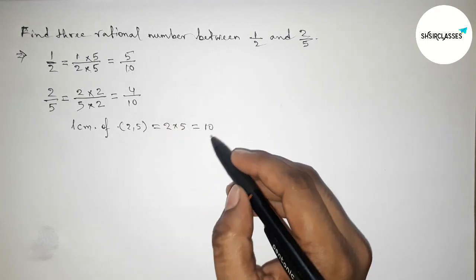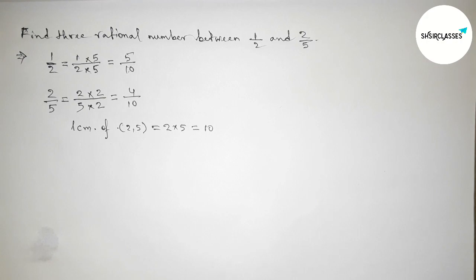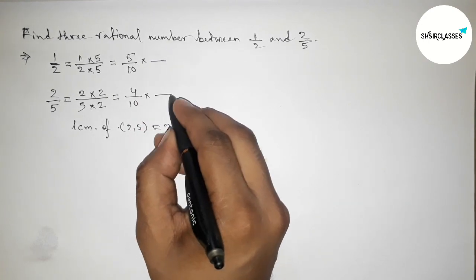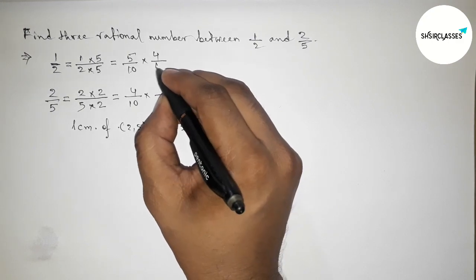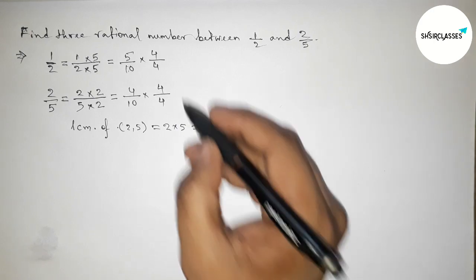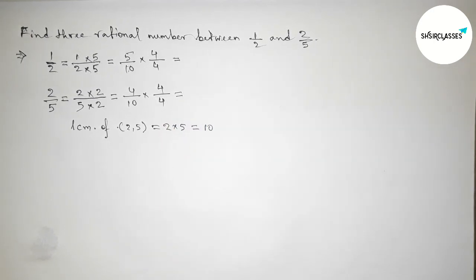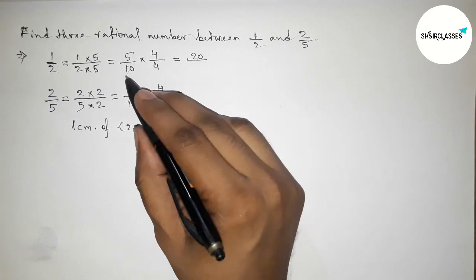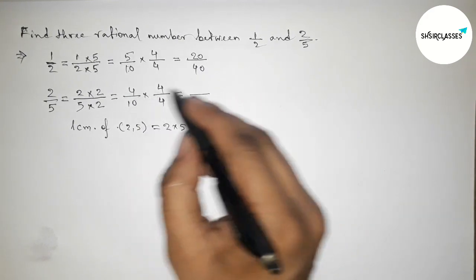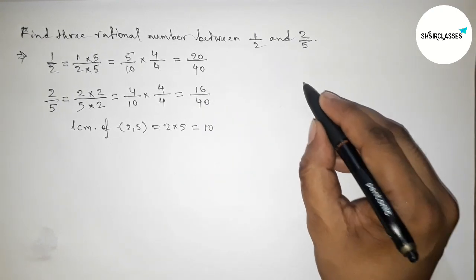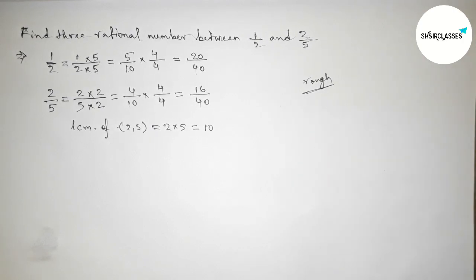Now we need to find 3 rational numbers, so we again multiply both numbers up and down by 4. This gives us: 5/10 becomes 20/40, and 4/10 becomes 16/40. Now both denominators are equal at 40.